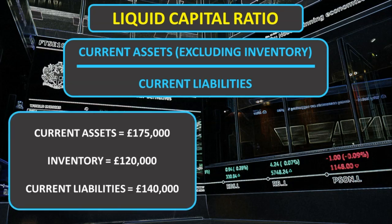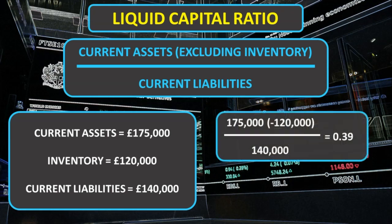Using the information from the previous balance sheet, the calculation would look like this: current assets of £175,000 minus £120,000 inventory equals £55,000, divided by £140,000 current liabilities, which gives you 0.39 to 1.